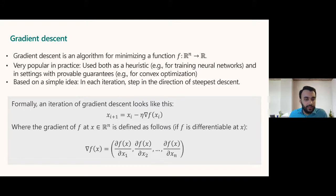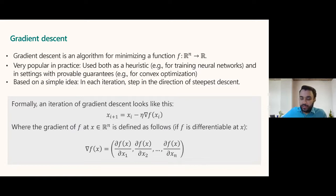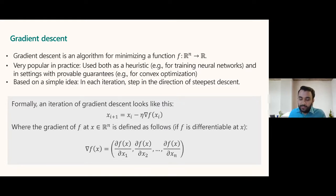The gradient is a vector of partial derivatives. If you're not comfortable with calculus, just keep in mind that the gradient is the slope at that point — it points towards the direction of steepest ascent, so minus the gradient points in the downward direction.